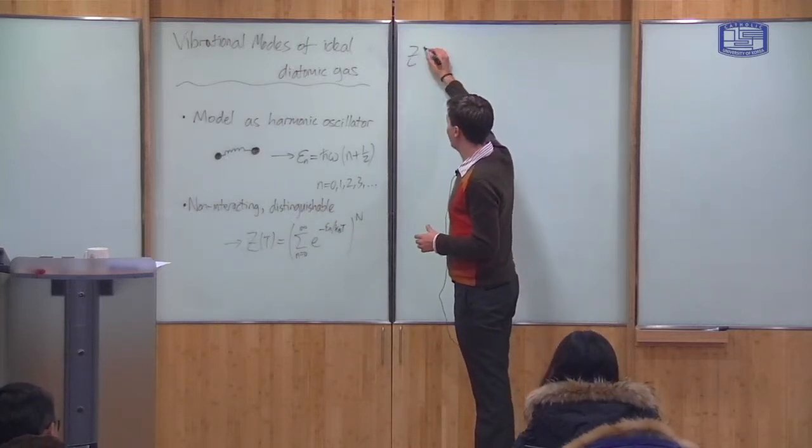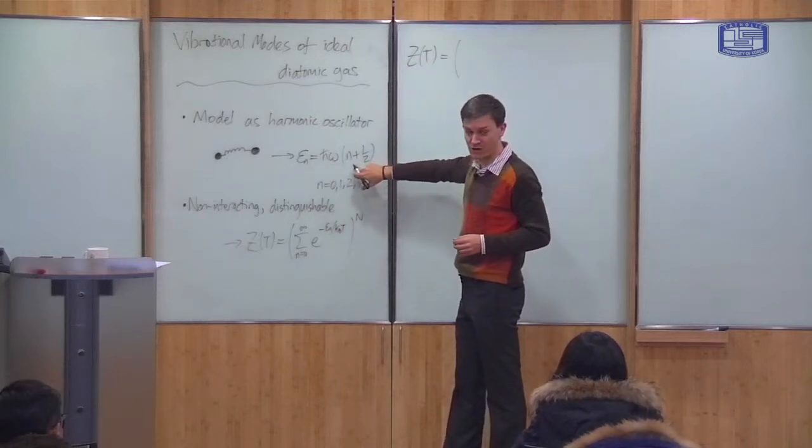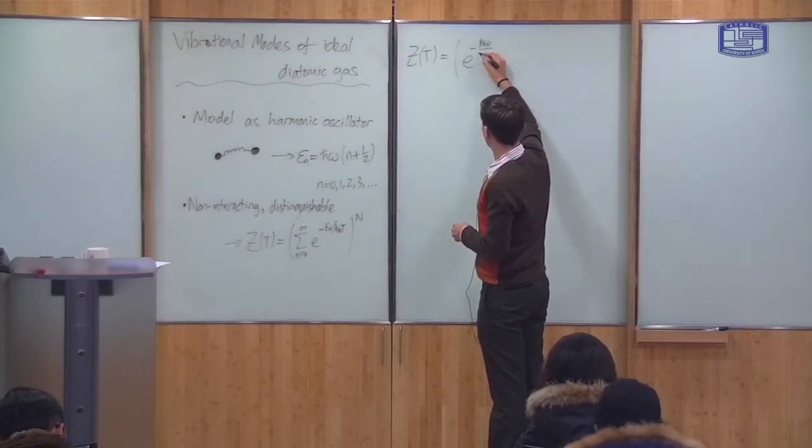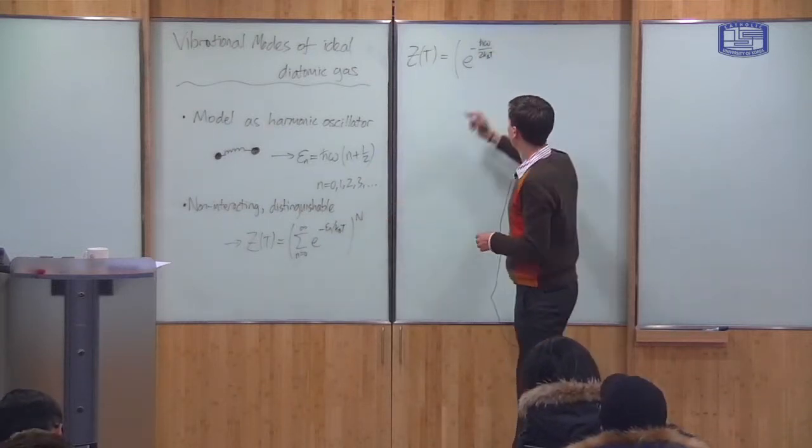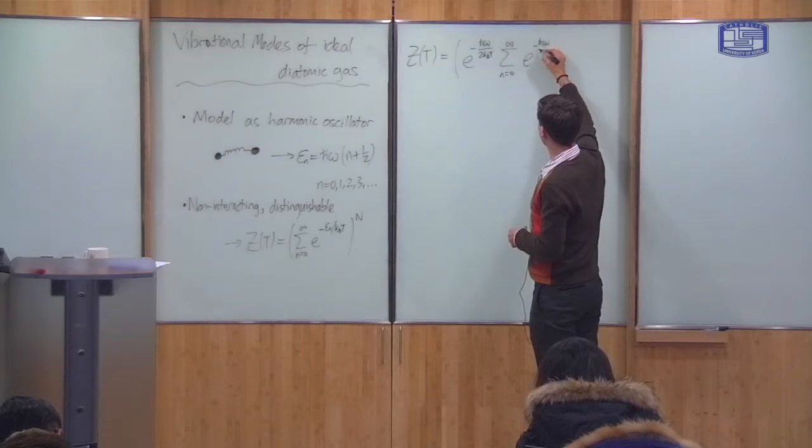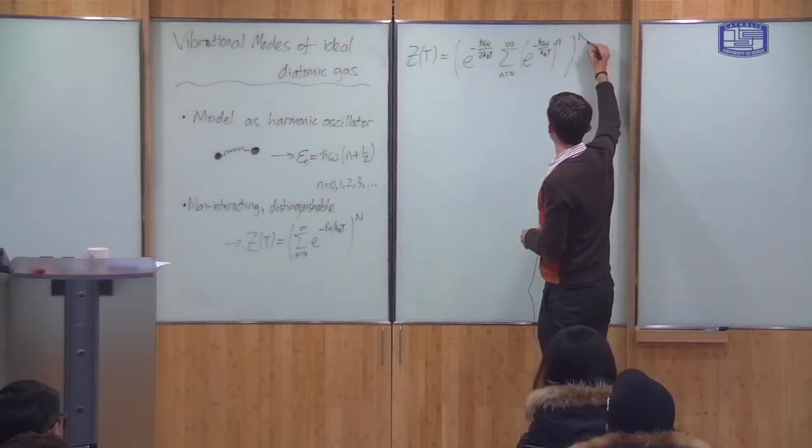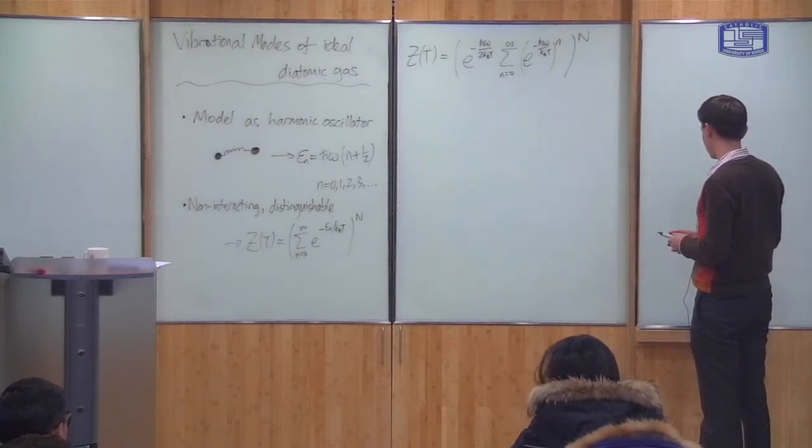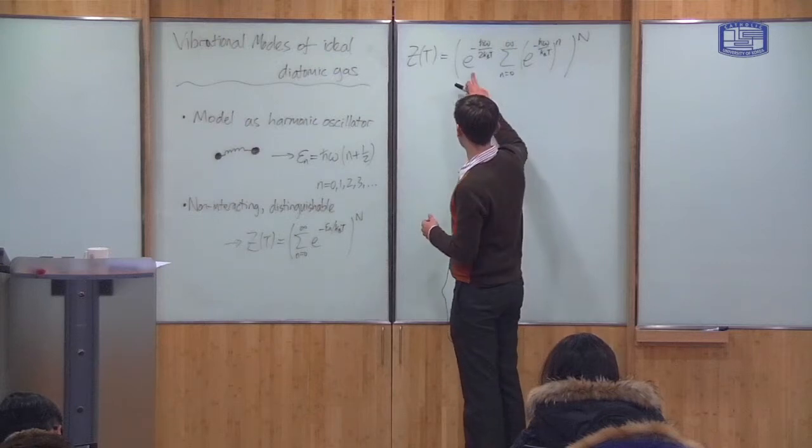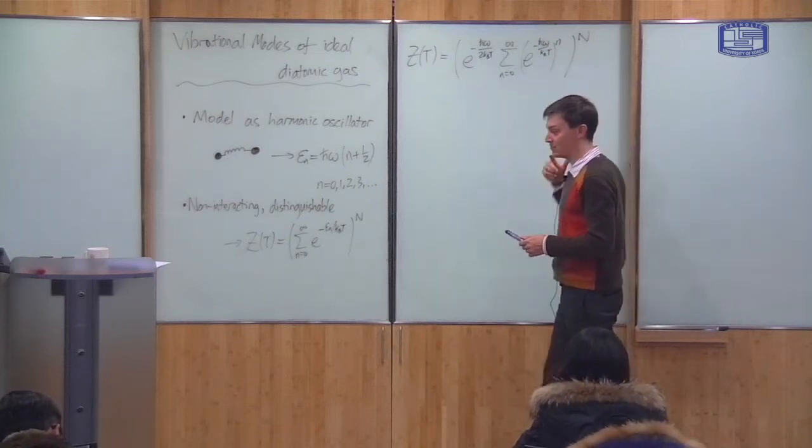So let me show you how it's done. We've done the calculation similar to this before already. Z of T is, so epsilon_n is this. I can take the factor of a half outside. So this gives me e to the minus h-bar omega over 2k_B T. That's taken the factor of a half. And I get the sum n goes from zero to infinity, and I've got e to the minus h-bar omega over k_B T to the power n. Then this is the geometrical sum. So we know the result.